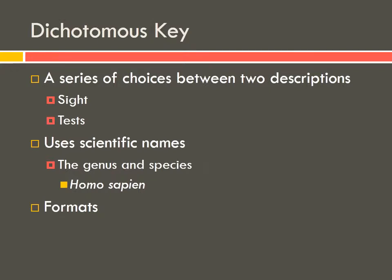Dichotomous keys can be created for many different things, but we're going to be using them to find the scientific names of our unknowns. You might remember when we talked about scientific names a few weeks ago when we were discussing taxonomy. The scientific name is made up of two parts: the genus and the species. The genus is always capitalized; the species is not.